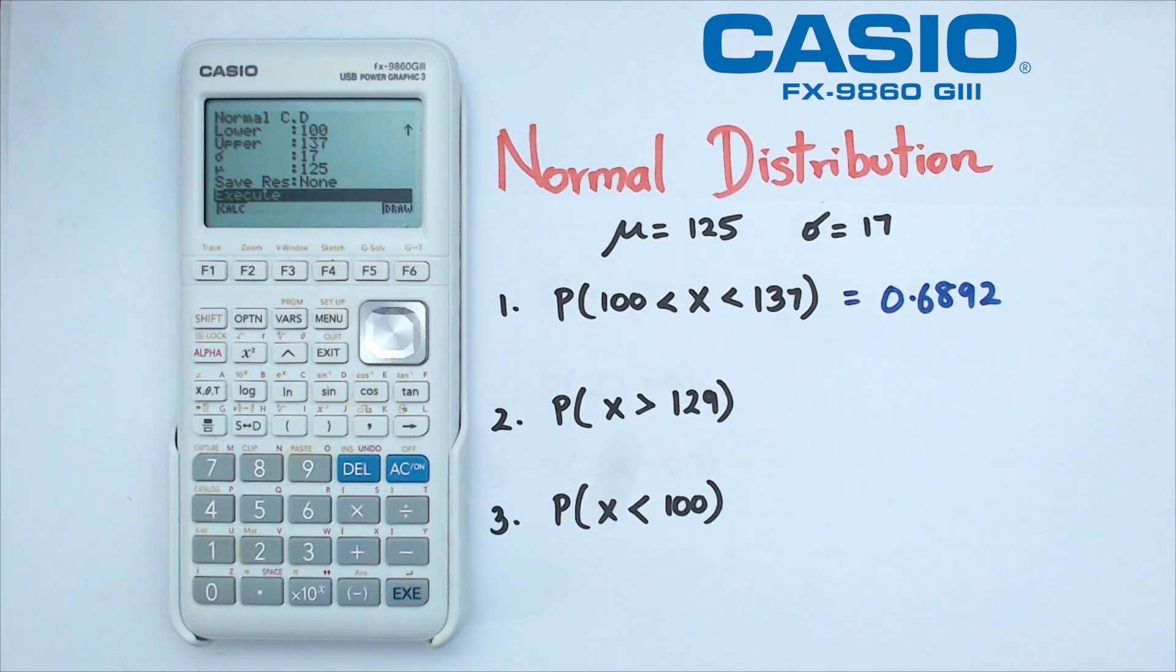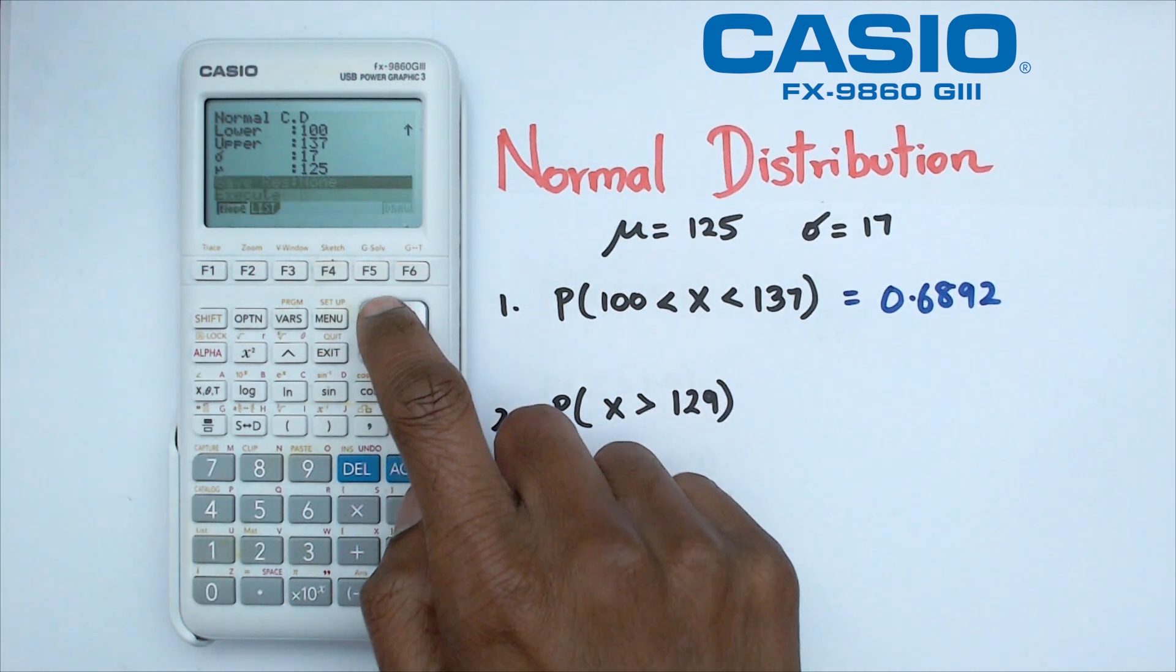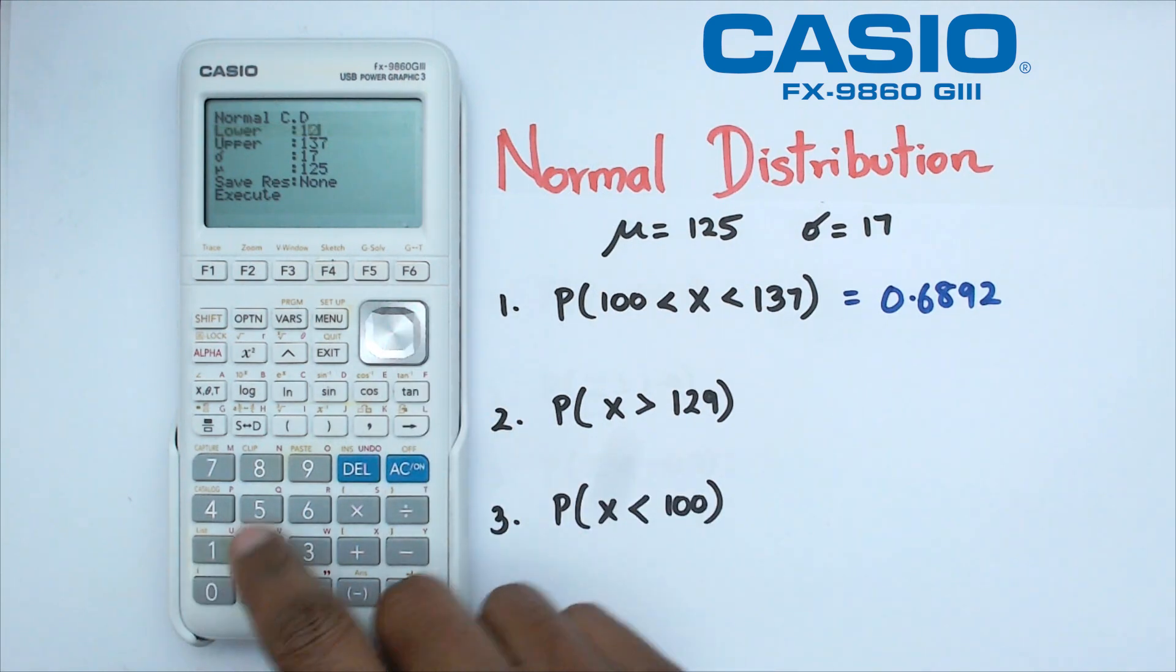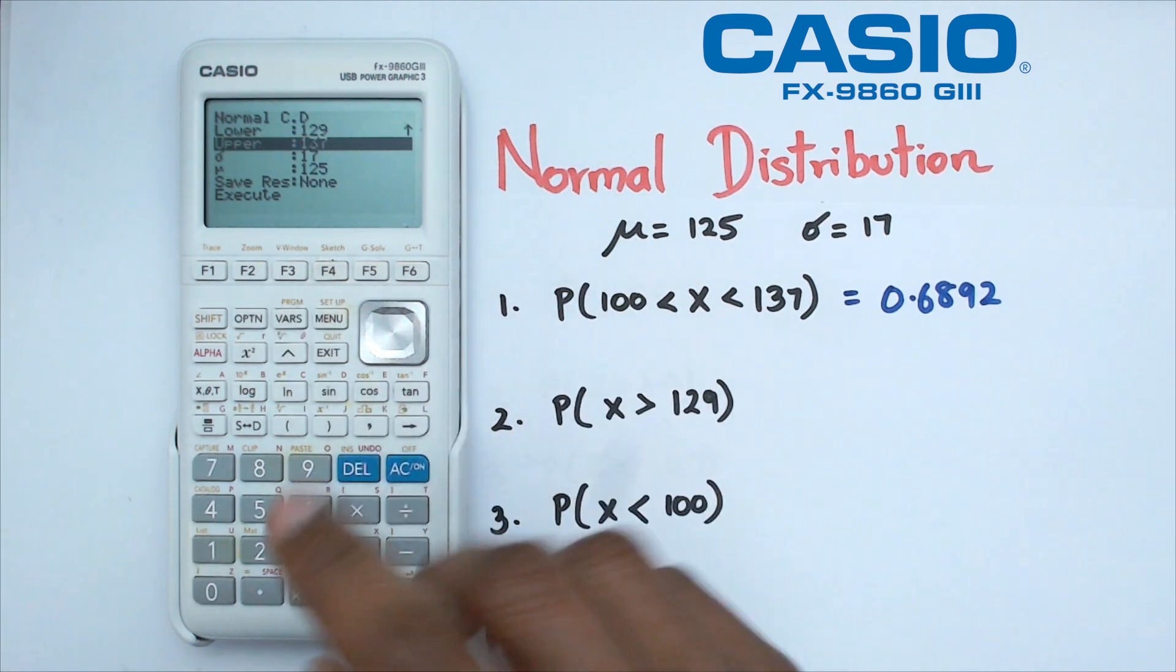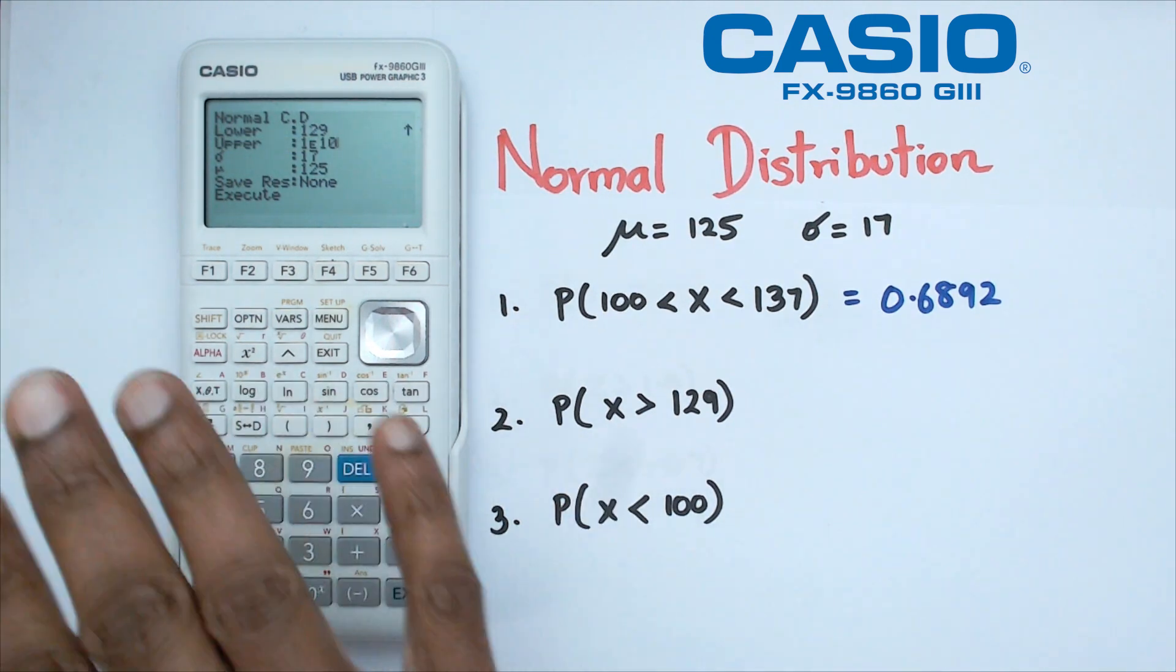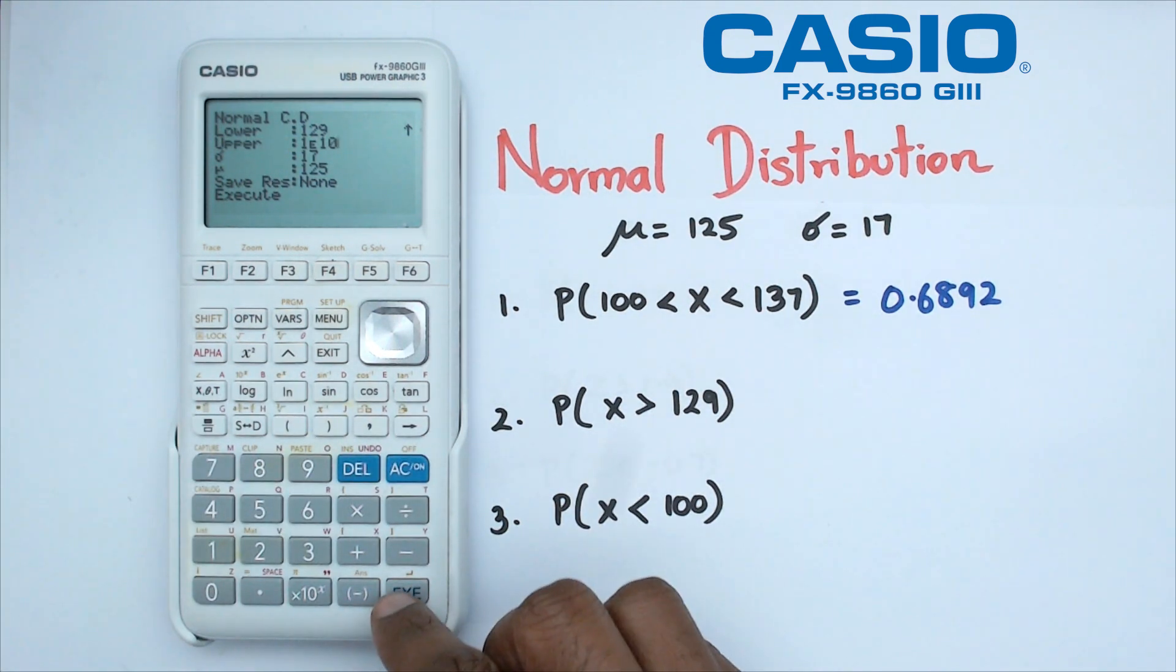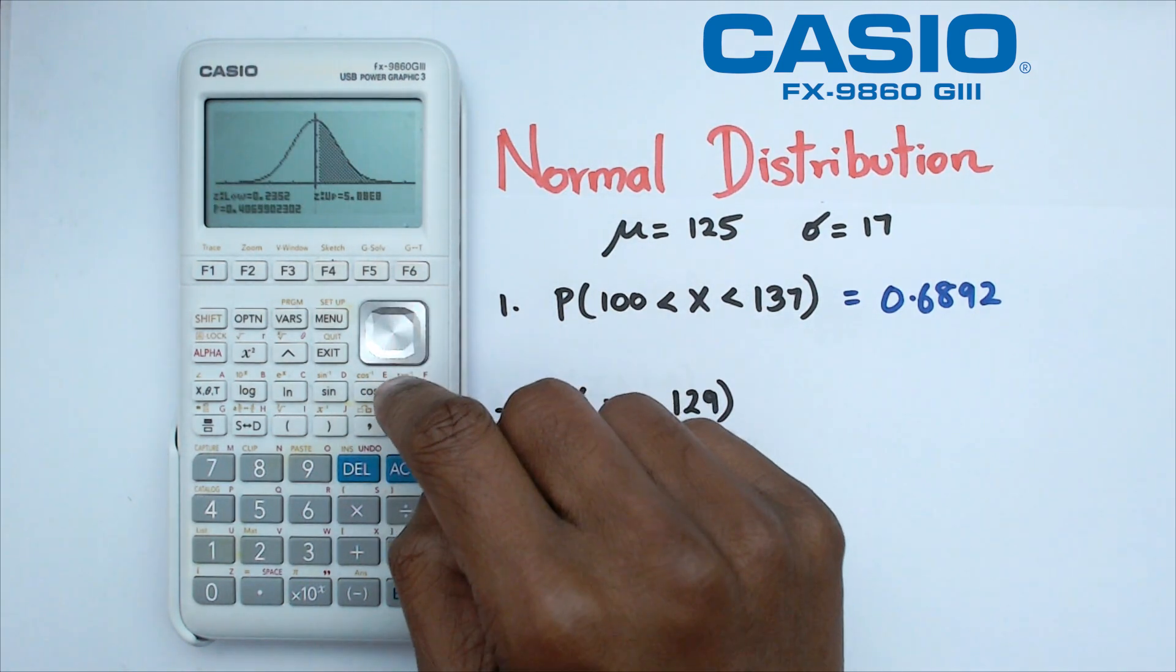All right, so let's look at question number two, when we have X greater than 129. In this case, our lower limit is going to be 129. And as for our upper limit, we're going to put 1 times 10 to the power of 10. So that kind of covers the highest number possible.